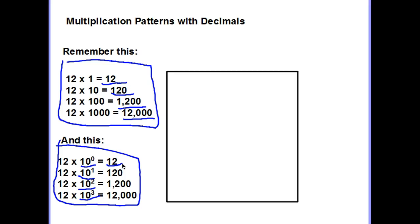So if we have 3 as an exponent, we're going to have some zeros. In fact, 10 to the third power is the same as 1,000, and we understand that. That's the work we've already done. Now let's apply it to decimals.